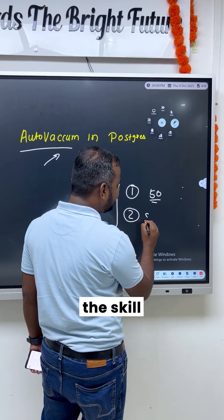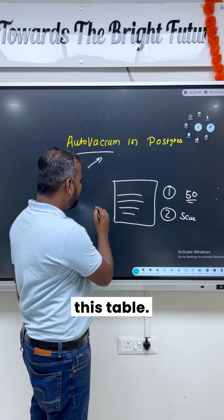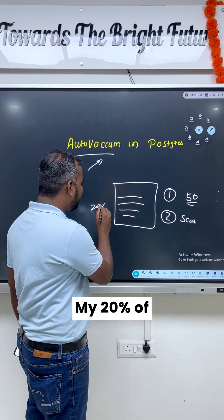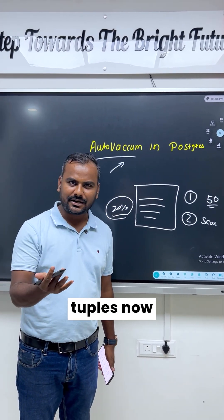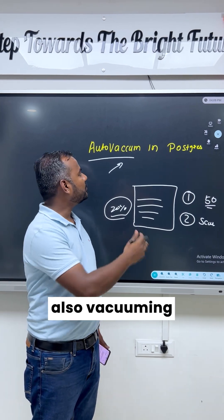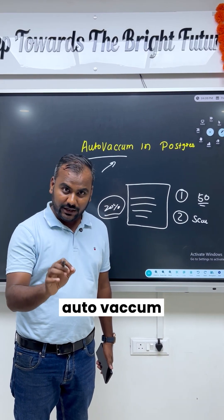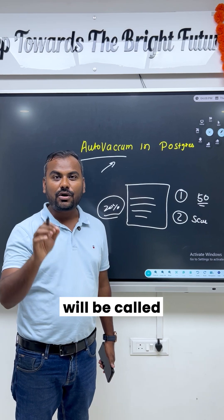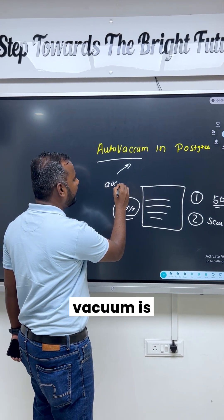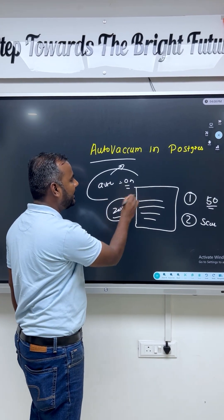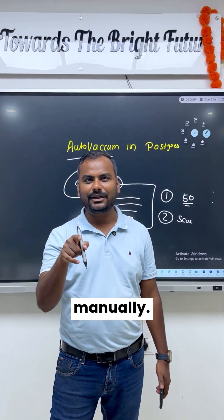You can also mention a Scale Factor. For example, if 20% of the data in a table has been changed and you want to remove those dead tuples, vacuuming can be called at that point too. But remember, Auto Vacuum will only be triggered when the Auto Vacuum setting is turned on. Otherwise, you need to call vacuuming manually.